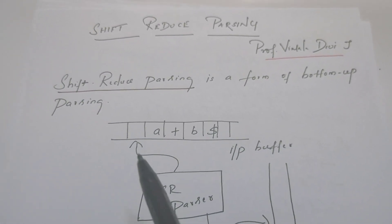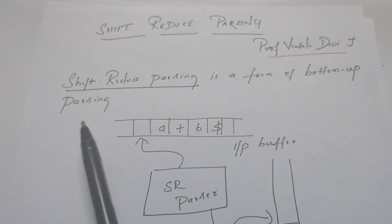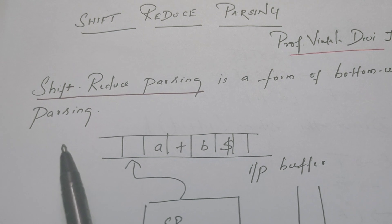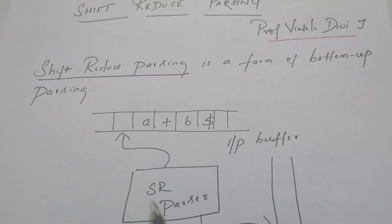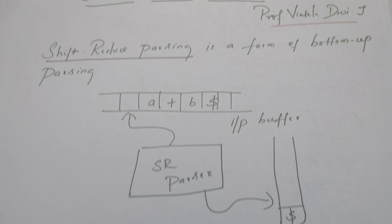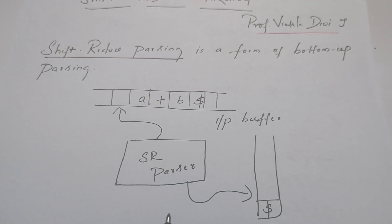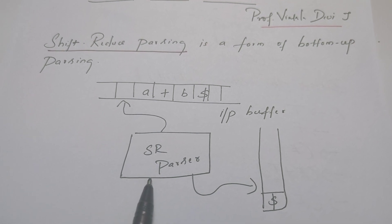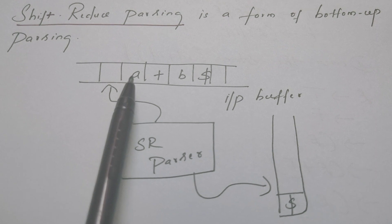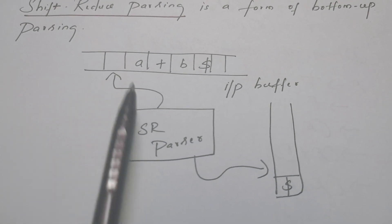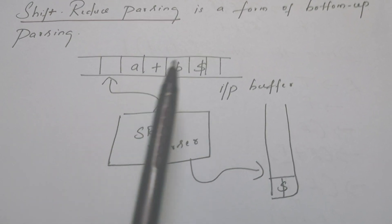Shift-reduce parsing is a form of bottom-up parsing. In fact, all bottom-up parsers can be called shift-reduce parsers in general. This block diagram shows how parsing happens: there is a control unit, and the input string is available in the input buffer. The control unit scans the input buffer from left to right, character by character.